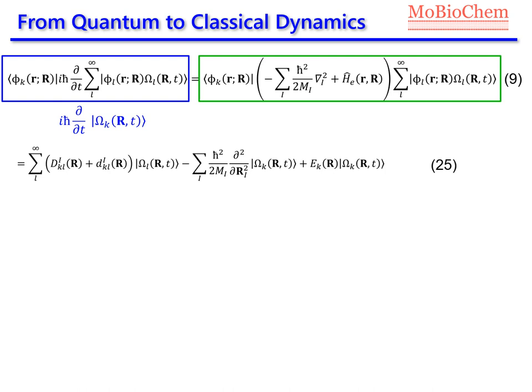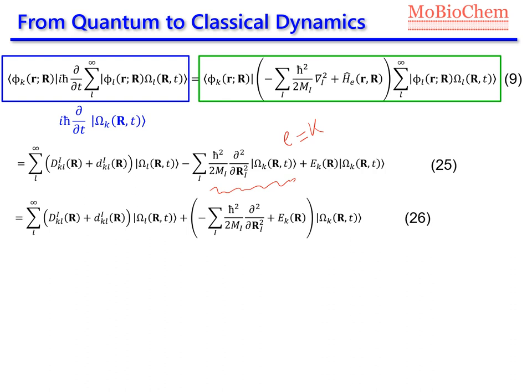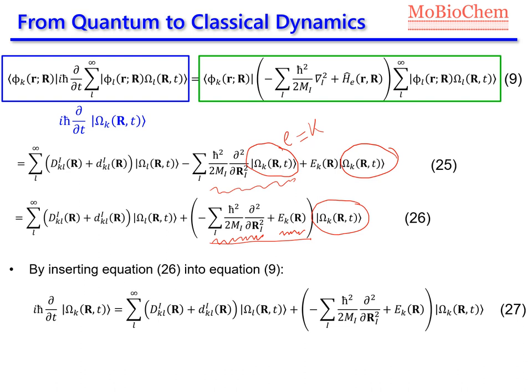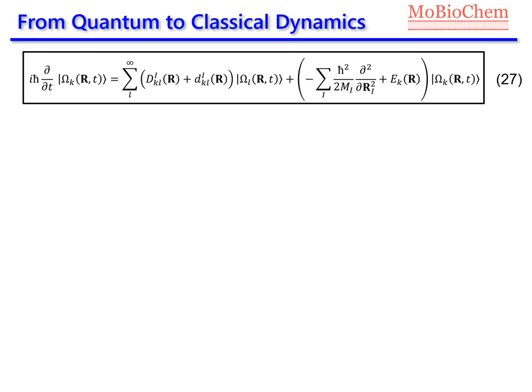In equation 25, only when l equals k is this term non-zero. We can then write equation 25 as equation 26, where the nuclear wave function multiplies a parenthesis containing the kinetic energy of the nuclei as the first term and the potential energy of electronic state k. Finally, inserting equation 26 into equation 9, we get the final form of the time-dependent Schrödinger equation.